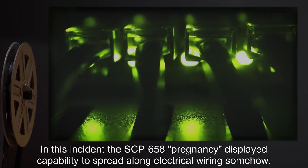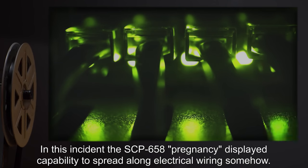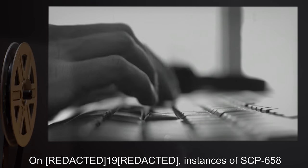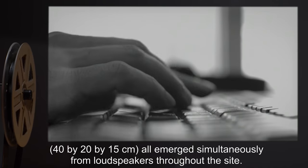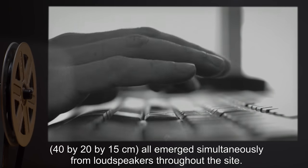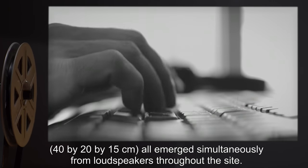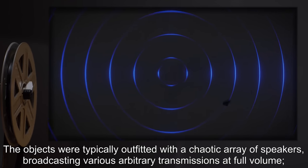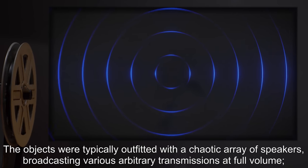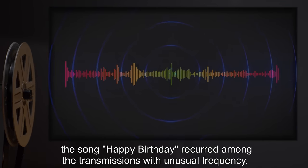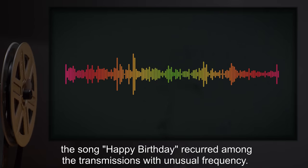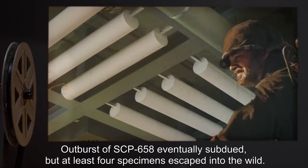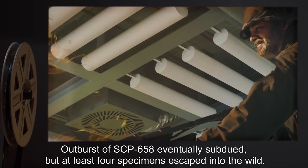the SCP-658 pregnancy displayed capability to spread along electrical wiring somehow. 19 instances of SCP-658, 40 by 20 by 15 centimeters, all emerged simultaneously from loudspeakers throughout the site. The objects were typically outfitted with a chaotic array of speakers, broadcasting various arbitrary transmissions at full volume. The song Happy Birthday recurred among the transmissions with unusual frequency. Outburst of SCP-658 eventually subdued, but at least four specimens escaped into the wild.